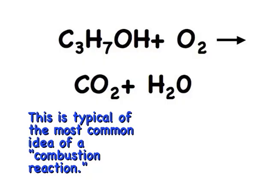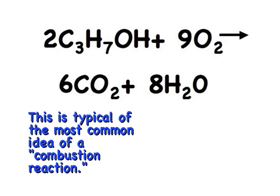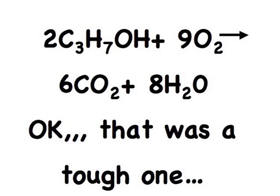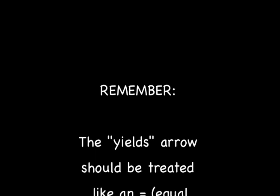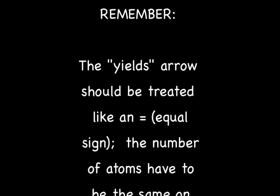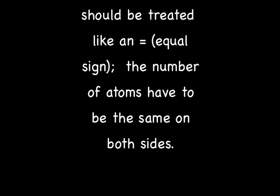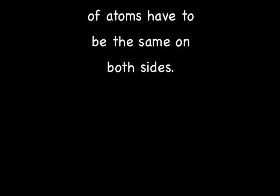Balance? Yes. We won't go step by step here, but note the odd number of oxygens and the even number of hydrogens. In that case, you've got to even out both before you can balance the equation. Remember, the yields arrow should be treated like an equal sign. The number of atoms have to be the same on both sides of the equation.